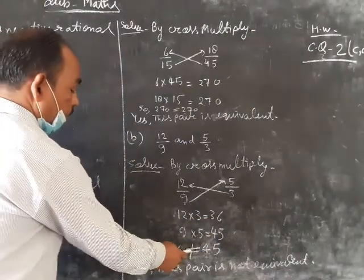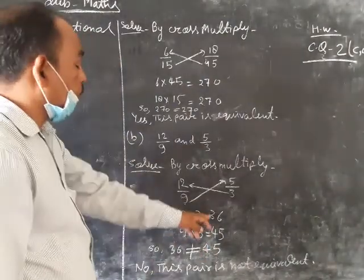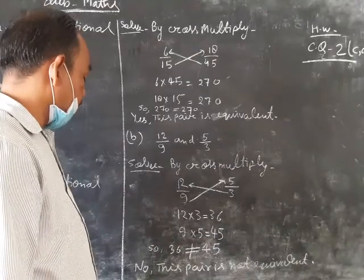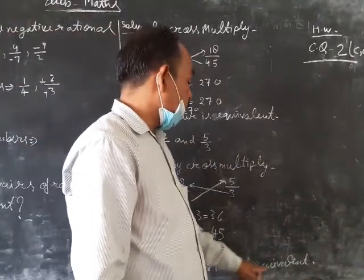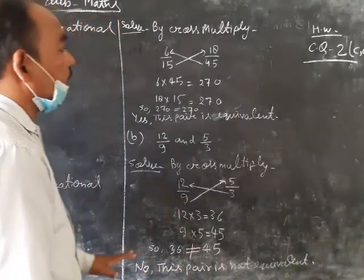So, 36 is not equal to 45. No. This pair is not equivalent.